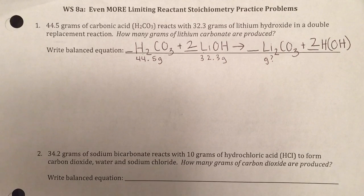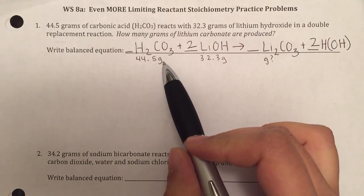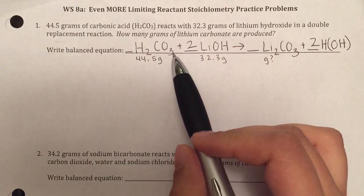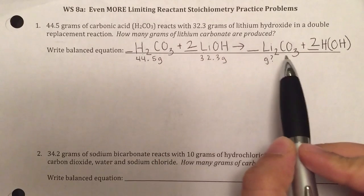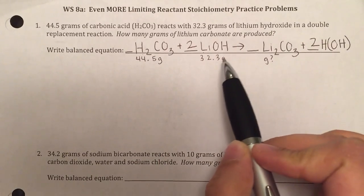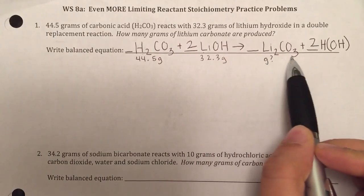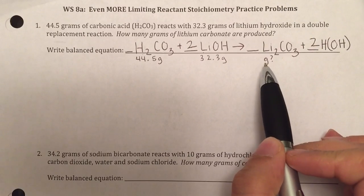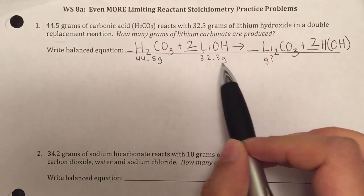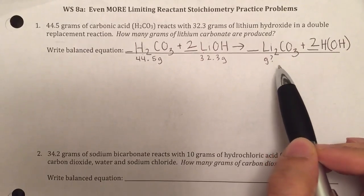In order to figure this out, I first need to figure out who's my limiting reactant, and the only way to do that is to write two conversions, one going from grams of carbonic acid to lithium carbonate, and another going from lithium hydroxide to lithium carbonate. Whichever one of these makes less, that's going to decide who my limiting reactant is and how much lithium carbonate I actually make.